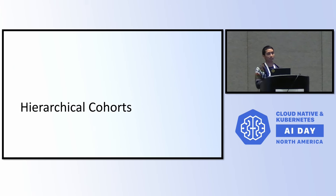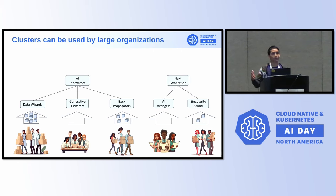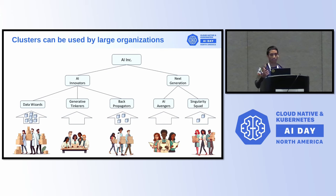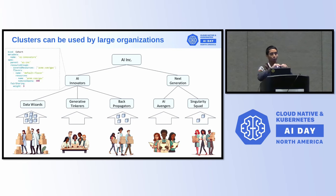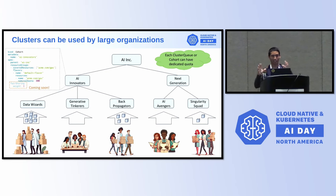Another feature we recently introduced is hierarchical cohorts. In reality, organizations don't have just three researchers — they have teams, teams belong to departments, and departments are part of a company, all with different demands. We already saw cluster queue definitions at the low level, but we can also define cohorts that group cluster queues together and define the same policies for quotas, additional quotas, and fair sharing. Fair sharing in the hierarchy is coming soon in the next few versions.